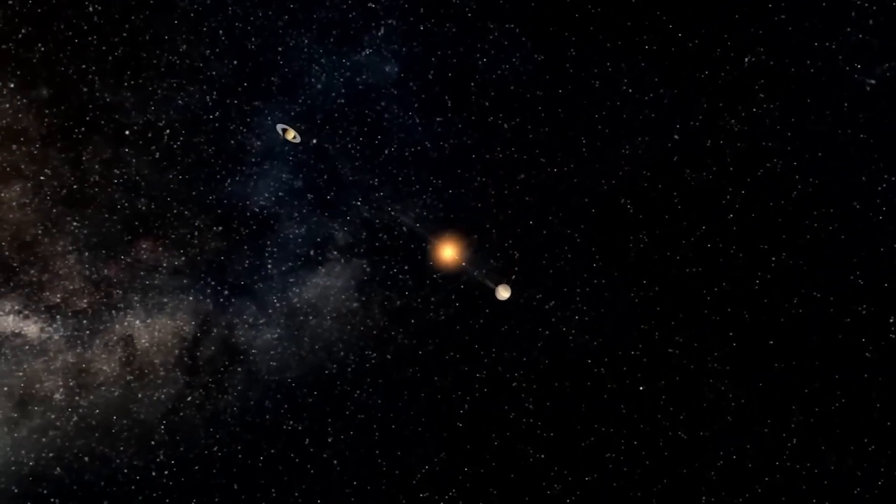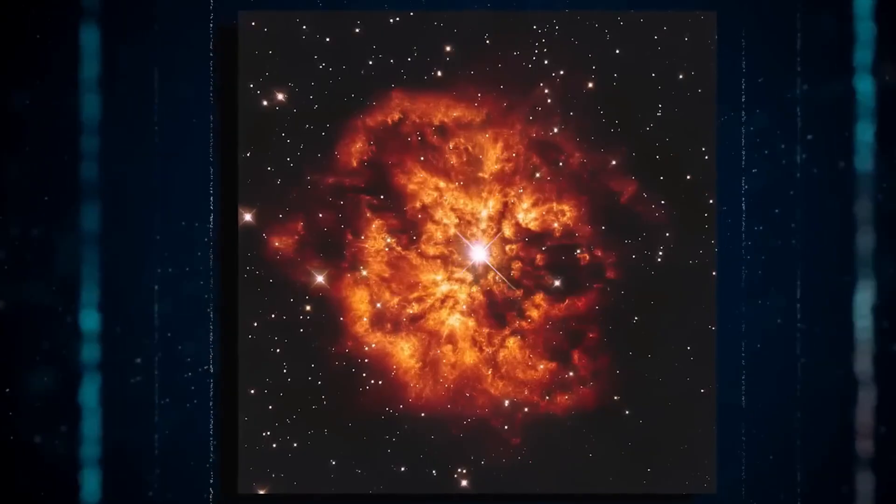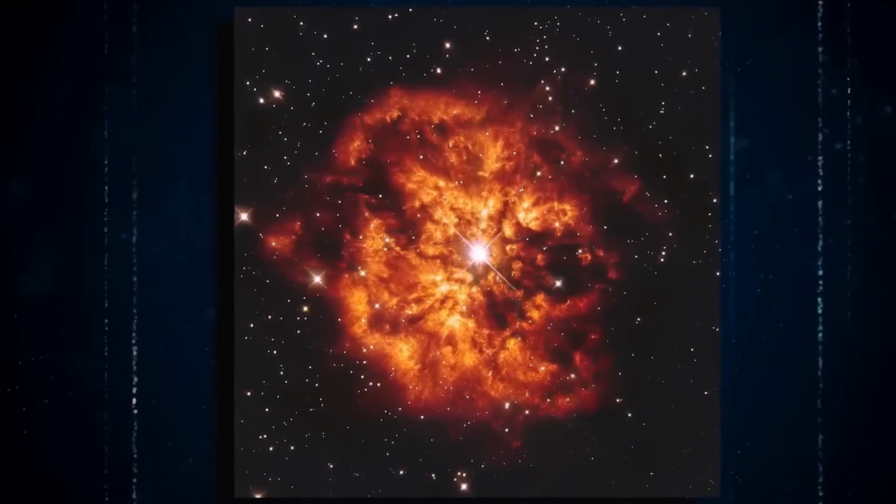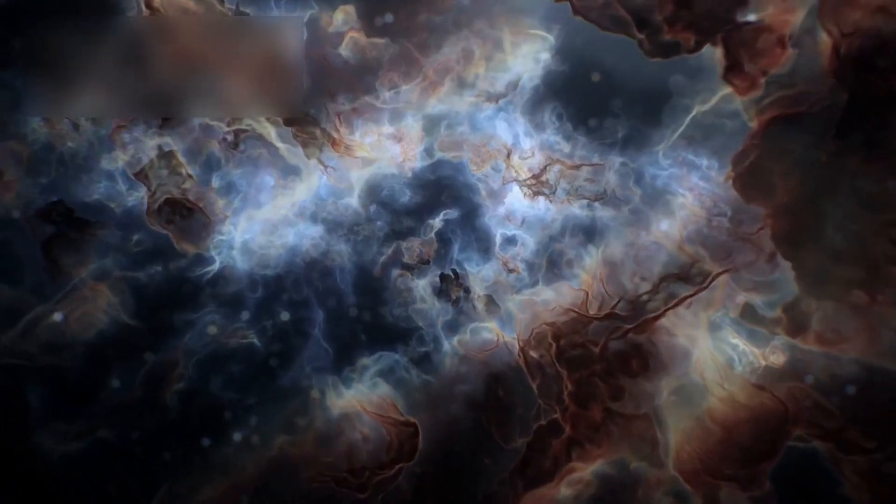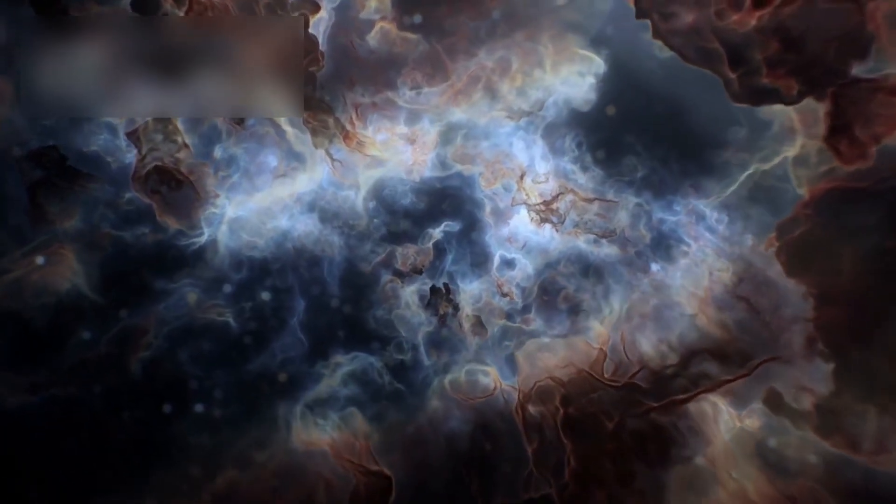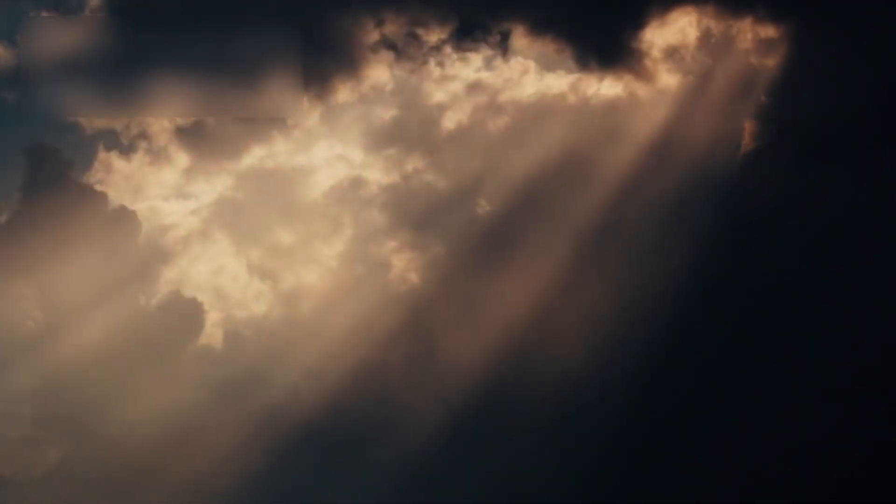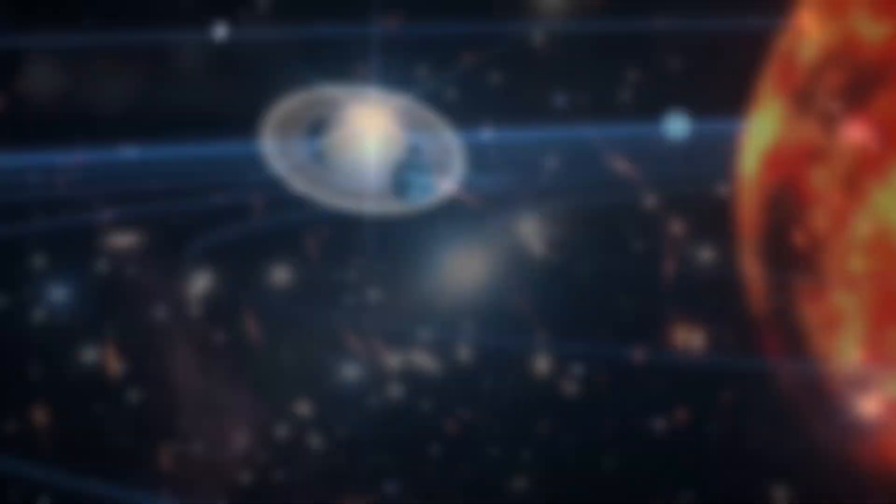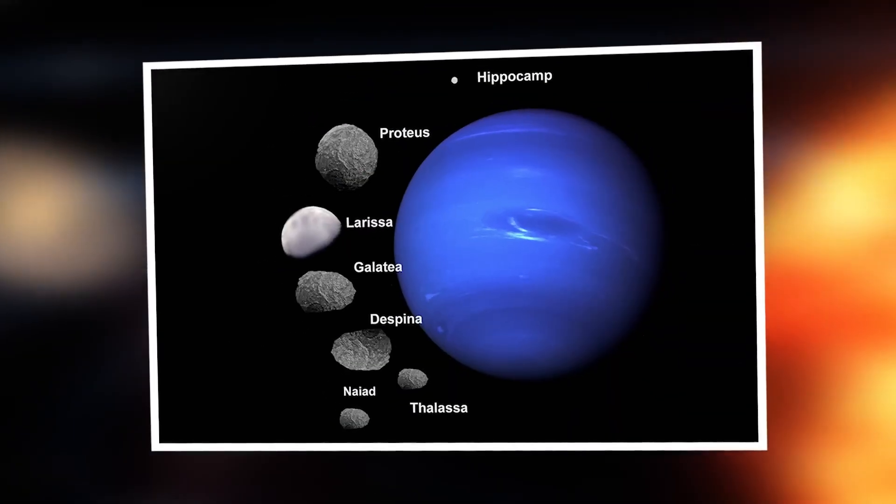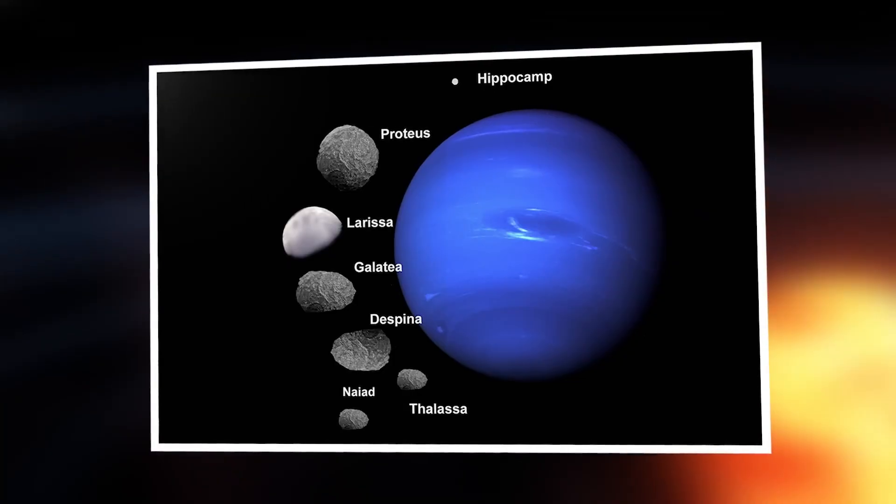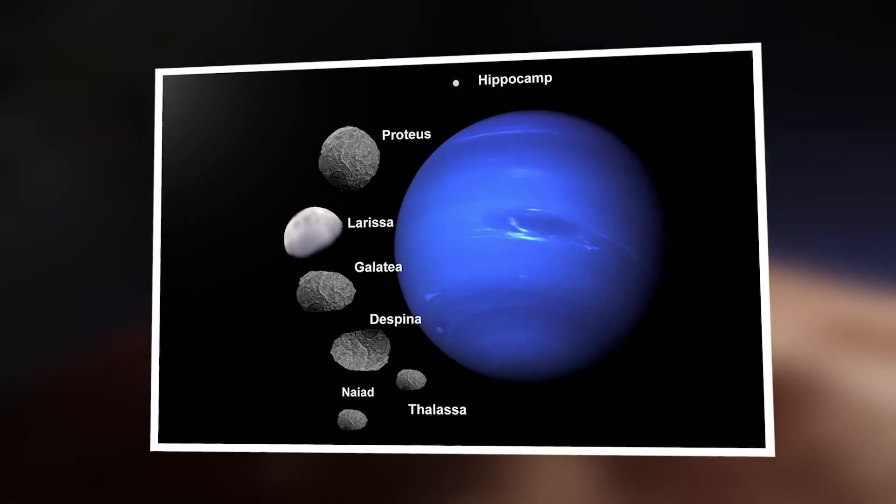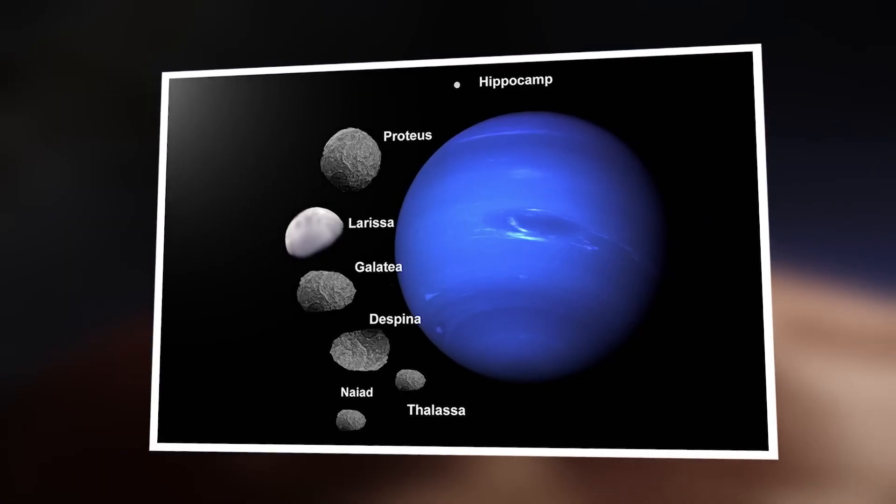The Webb has lifted a veil on a part of the cosmos so ancient and alien that its light has traveled for nearly the entire age of the universe just to reach us. In that light is a story we do not yet understand, a puzzle written in infrared, encoded across millions of years and billions of miles. It whispers of forces older than stars, of minds larger than galaxies, of a cosmos that thinks and dreams in patterns we are only just beginning to perceive.